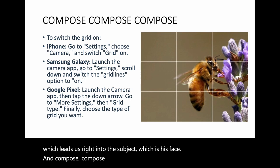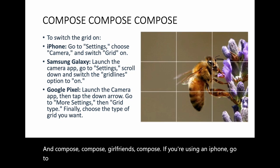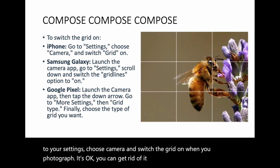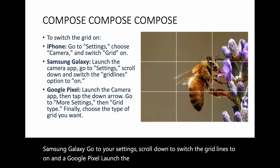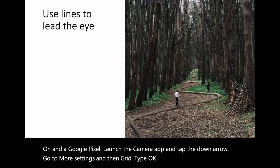Compose, compose, compose. If you're using an iPhone, go to your settings, choose Camera, and switch the grid on. For a Samsung Galaxy, go to settings and scroll down to switch grid lines on. For a Google Pixel, launch the camera app, tap the down arrow, go to More Settings, then Grid Type. Put the grid on so you know things are lining up.